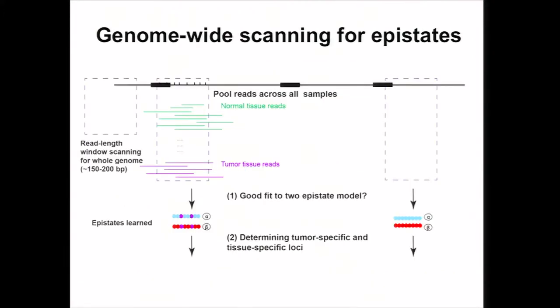In overview, we develop a method called epistate that can pool reads from both normal and tumor samples, then use a window length of the read length — about 200 bp — to scan the whole genome, asking whether each locus has two epistates or not. If so, we determine whether it is tumor-specific or tissue-specific for further downstream analysis. Today I will present some of our results on the tumor-specific analysis.